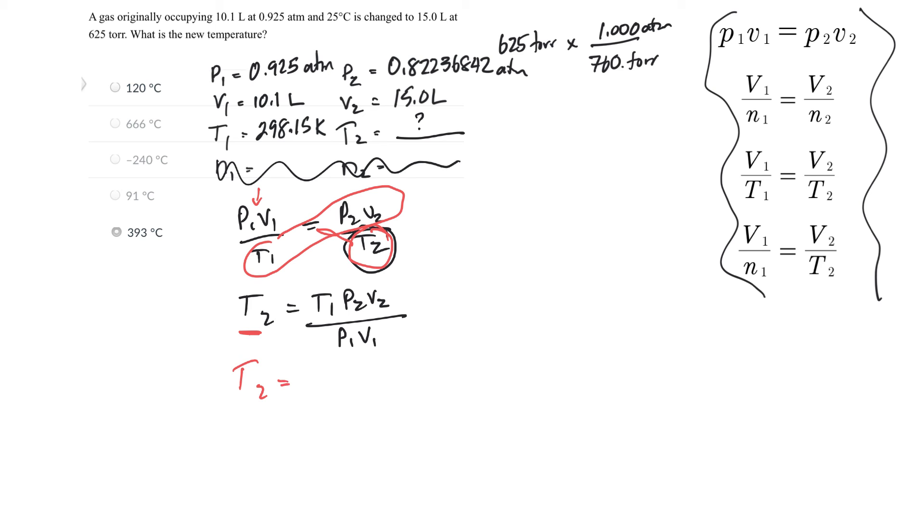Okay, so let's plug things in. So T1, 298.15 Kelvin, P2, 0.82236842 atmospheres times V2, 15 liters, divided by P1, 0.925 atmospheres times V1, 10.1 liters.